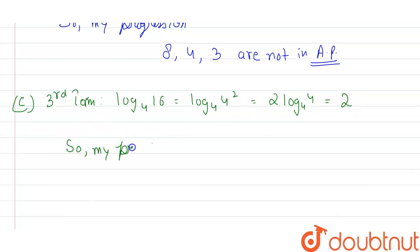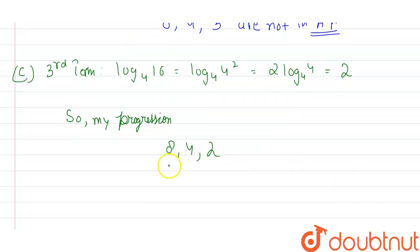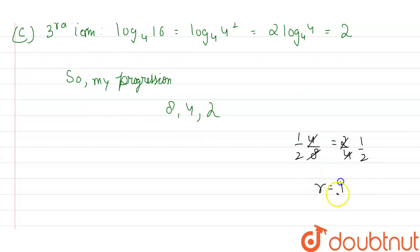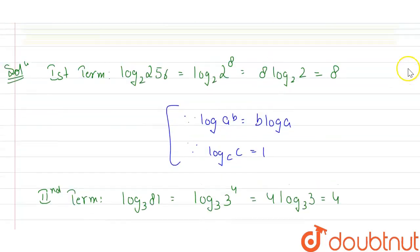The progression is now 8, 4, 2. Checking the common ratio: 4/8 = 1/2 and 2/4 = 1/2. Since the common ratio r = 1/2 in both cases, the terms are in GP. Option C is correct.